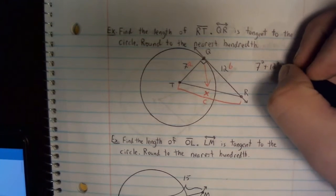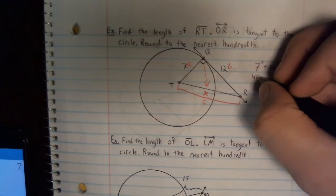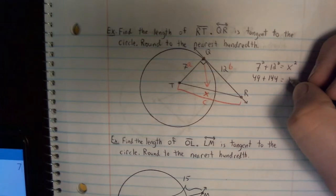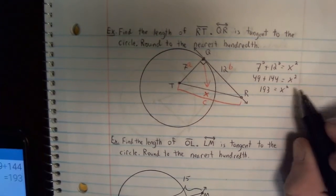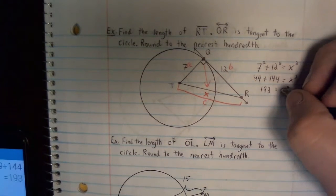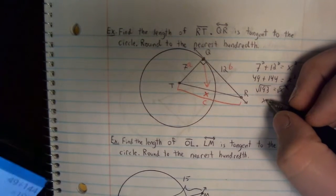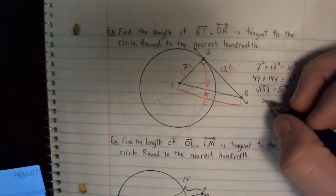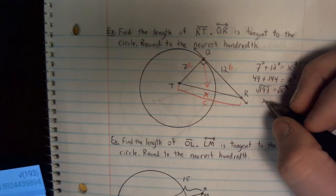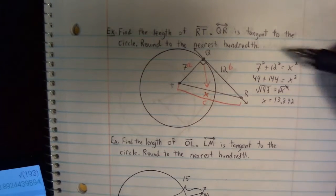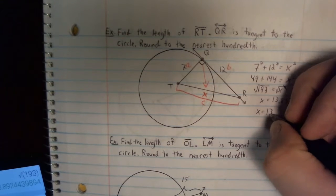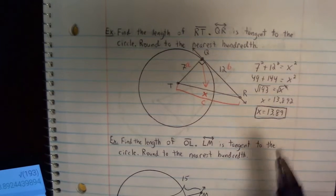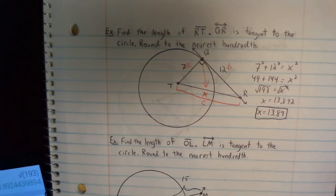So we have 7 squared plus 12 squared equals X squared. So that's going to give us 49 plus 144. If we add 49 and 144, we get 193. Notice I have a square term. We're going to have to take the square root to get rid of that. And we need to check, the square root of 193 is 13.892. They ask us to round to the nearest hundredth. So this 2 tells my 9 to stay how it is. 13.89 is the length of RT. Easy enough to do.